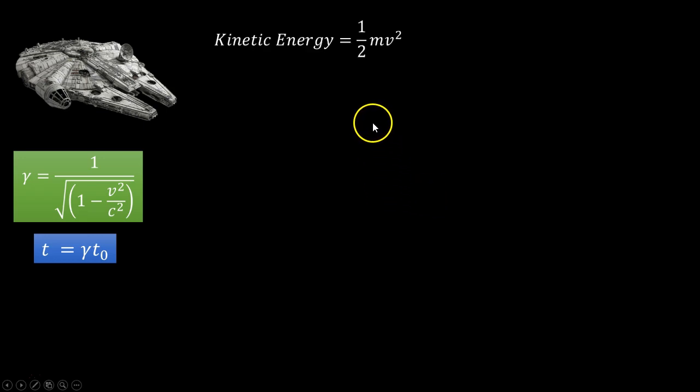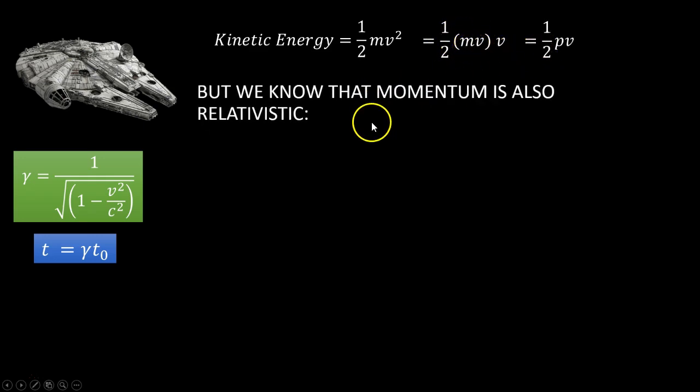Let's have a look at kinetic energy. Kinetic energy is a half mv squared, which you can take out the term mv, or momentum. And we know that momentum has relativistic properties. So we could say the relativistic momentum, this really is a better equation for kinetic energy. A half times gamma times by the rest momentum times by the velocity.